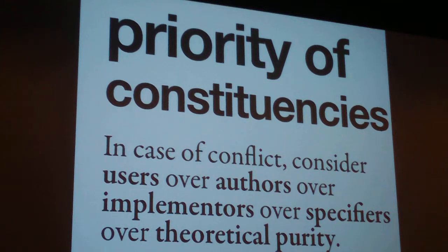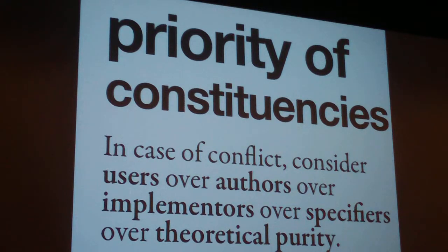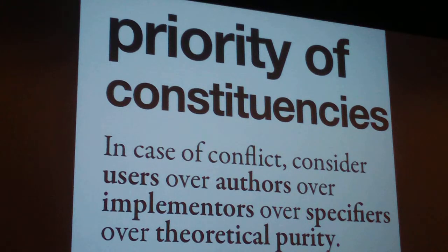Ian Hickson has always said, if there's a browser maker out there that disagrees with a new feature in HTML5 and says, 'I will never implement that feature in my browser,' then that feature just comes out of HTML5. Because what's the point of putting a feature that's not going to be implemented into the spec? The spec would just be fiction — it would never actually work on the web. So if a browser maker refuses to implement something, it comes out of the spec.